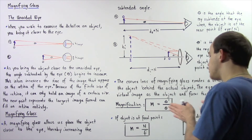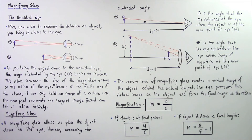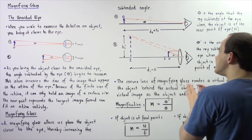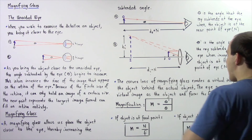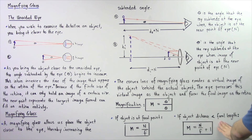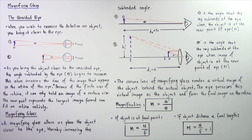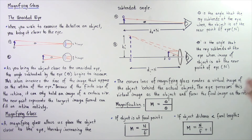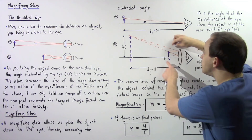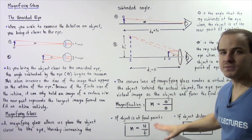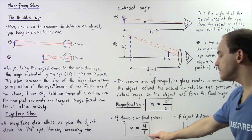Although we won't derive these equations here, we'll state them now. If the object distance is less than the focal length of the lens, the magnification is M = N/f + 1, where N is the near point distance and f is the focal length. If the object is placed exactly at the focal point of the lens, the equation becomes M = N/f.